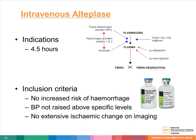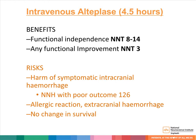Intravenous alteplase is one acute stroke reperfusion strategy. Alteplase is a tissue plasminogen activator which acts as a fibrinolytic agent. It is proven to be beneficial in the first four and a half hours after stroke onset. The key inclusion criteria are no increased risk of hemorrhage from history and physical examination, no raised blood pressure above specific levels, and no extensive ischemic change on imaging. Alteplase improves long-term functional outcome — the number needed to treat to gain functional independence is 8 to 14, and for any functional improvement, the number needed to treat is 3. Risks include symptomatic intracranial hemorrhage, allergic reaction, and notably, there is no change in survival with intravenous alteplase.